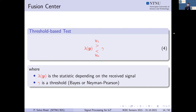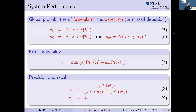The fusion center operates on a threshold-based test where a statistic lambda, computed by processing the received signal Y, is compared with a threshold defined according to Bayesian or Neyman-Pearson criteria, for instance giving a fixed global false alarm probability. System performance is evaluated using global probability of false alarm and detection at the fusion center, or we may consider error probability, or even precision and recall — the latter becoming useful when we have unbalanced probabilities in the binary states.